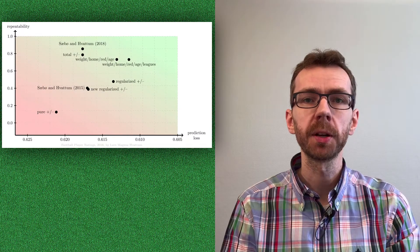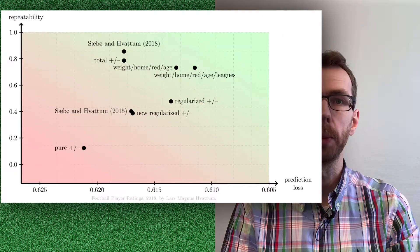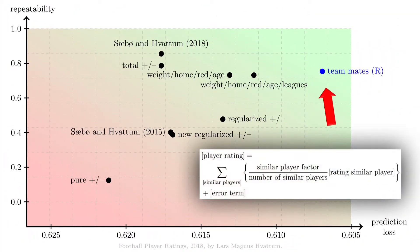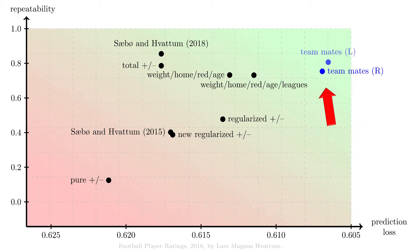Examining this from the perspective of our evaluation framework: the good news is that pushing the ratings of players towards the ratings of their most common teammates seems to produce better ratings. A second improvement is that we can get even better ratings by compensating for the duration of segments by adjusting the left-hand side coefficients instead of the right-hand side coefficient.